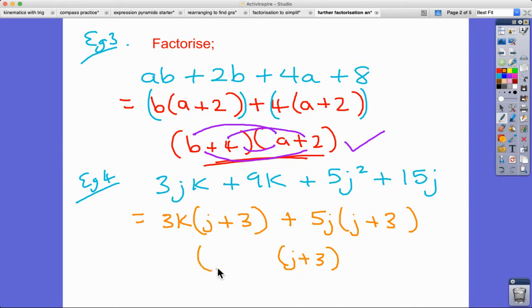And again, what we found is that we've got J plus three being the common factor. So what would go in this first bracket? Well, look above what we did. We had B and four in front of the two matching brackets. So here we've got 3K is the first term that's being multiplied by this common bracket, and then we've got 5J. So again, we've managed to factorise that very complicated looking expression of four terms into two brackets. And as I said, they're quite common questions. They come up at IGCSE level, and I'm sure GCSE level too.